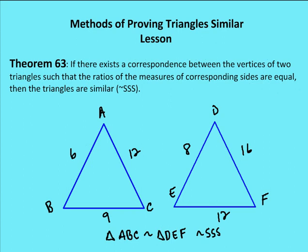Theorem 63 is the SSS similarity theorem. We said that the relationship of angles is going to be equal in corresponding polygons when they're similar, and the ratio of sides is going to be the same in similar triangles. Theorem 63 says: if there exists a correspondence between the vertices of two triangles such that the ratios of the measures of the corresponding sides are equal, then the triangles are similar.